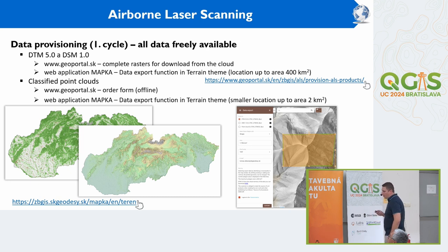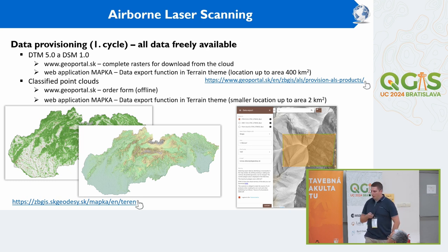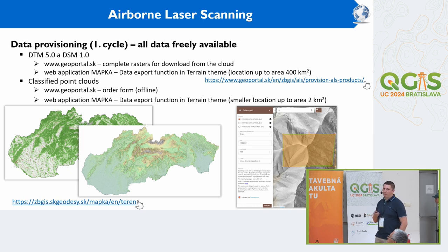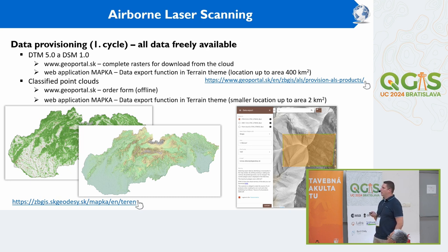All data are freely available, so everybody can download and use it for any purpose. You can download it directly from our web GeoPortal, or for smaller locations through the data export function in our web map application MAPKA. Classified point clouds can be exported from this application for small areas, or ordered by filling out a form and delivered offline, as point clouds from the first cycle in LAS format total more than 60 terabytes.